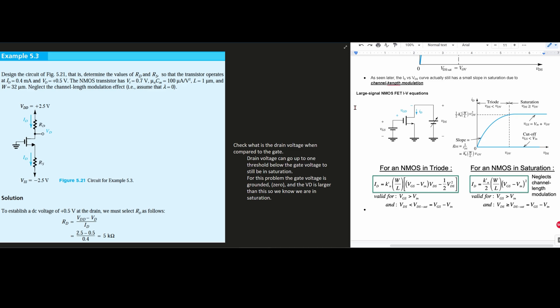Now the NMOS transistor has a VT of 0.7 volts, a micro N C ox equal to 100 microamps over voltage squared, and then we have L equal to 1 micrometer. We have W as 32 micrometers and we are to neglect the channel length modulation, which means that our lambda is going to equal zero.